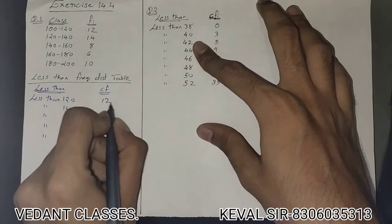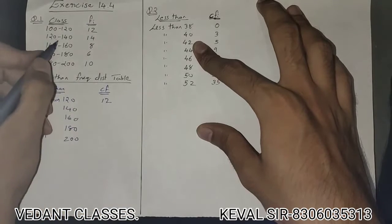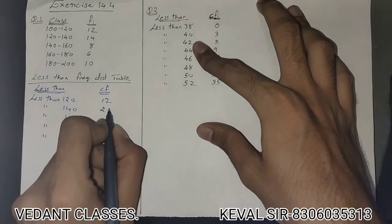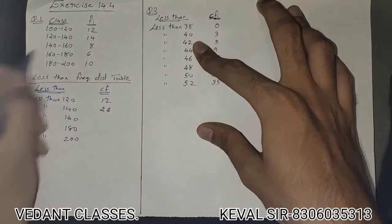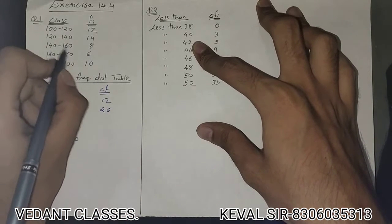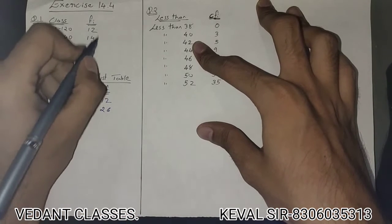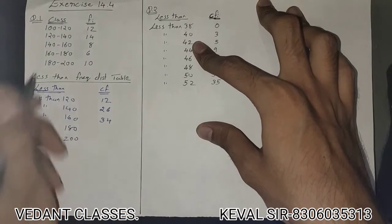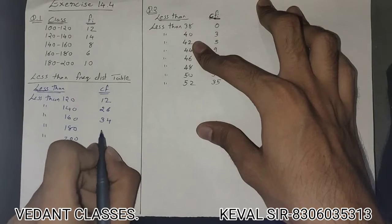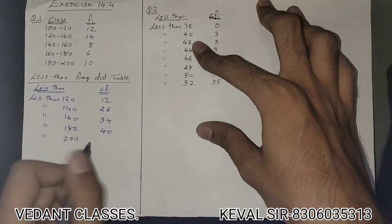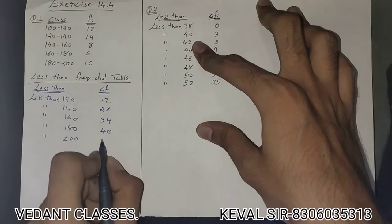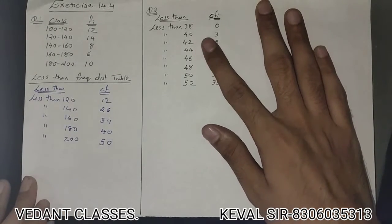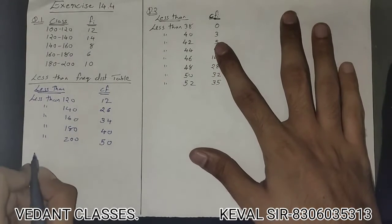For less than 120 the cumulative frequency is 12. For less than 140, adding the next value, it will be 26. For less than 160 it will be 34. For less than 180 it will be 40, and for less than 200 it will be 50. This is your cumulative frequency distribution table.